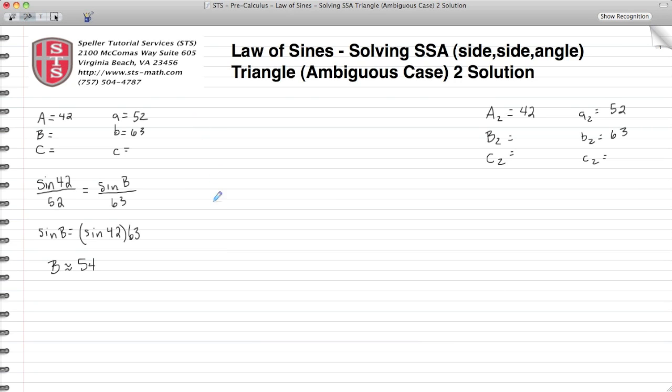To speed things up, I've already put some of the work together. Here we have angle A, we're taking the sine of 42, dividing it by the opposite side length, 52.